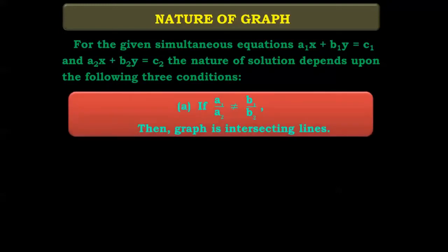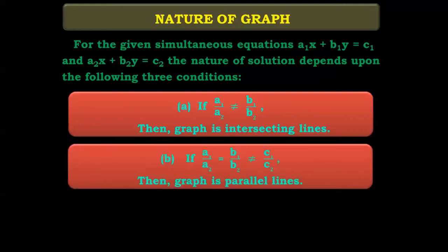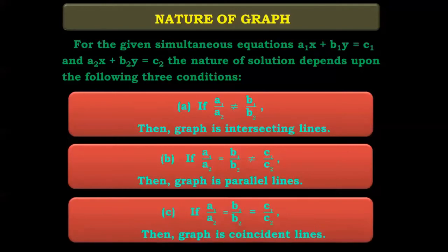If a1/a2 is not equal to b1/b2, then the graph is intersecting lines. If a1/a2 equals b1/b2 which is not equal to c1/c2, then the graph is parallel lines. And if a1/a2 equals b1/b2 equals c1/c2, then the graph is coincident lines.